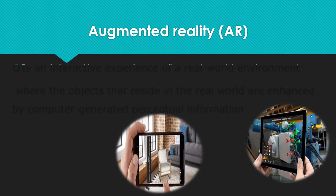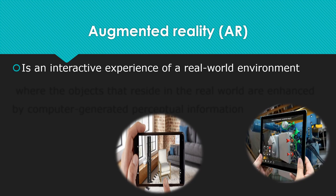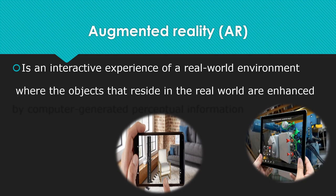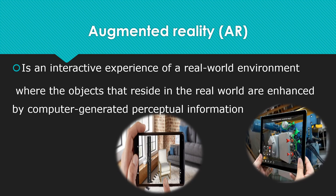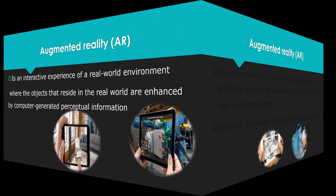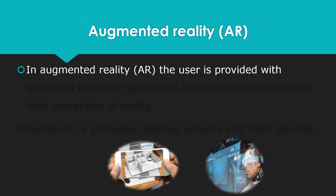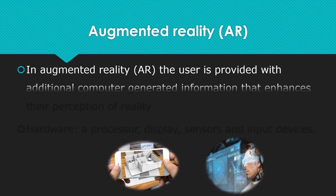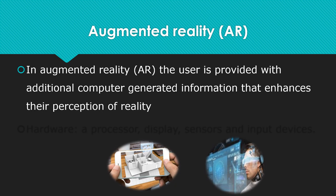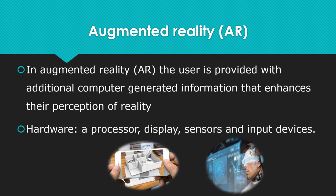Augmented reality is an interactive experience of a real-world environment where the objects that reside in the real world are enhanced by computer-generated perceptual information. The user is provided with additional computer-generated information that enhances the perception of reality. Hardware used in augmented reality includes a processor, display, sensors, and input devices.